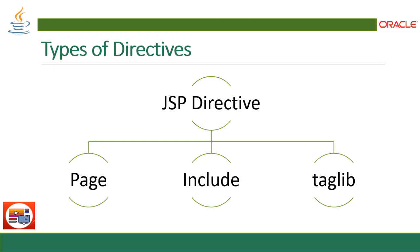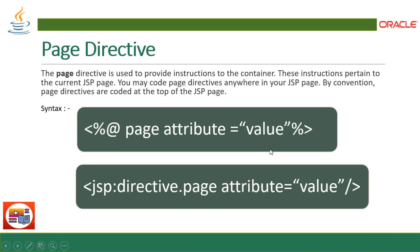Using tag library directive you can make your own tag with your own definition and use it in your JSP. Declaration and definition of a custom tag is possible with the help of this JSP directive. Now let's look at the page directive in detail. The page directive is used to provide instructions to the container. These instructions pertain to the current JSP page. You may code page directives anywhere in your JSP, though they are typically placed at the top.